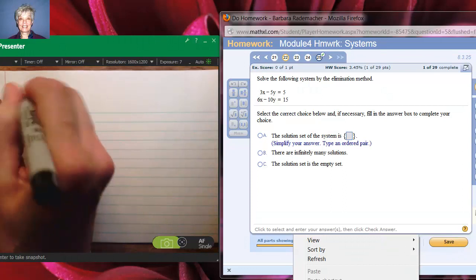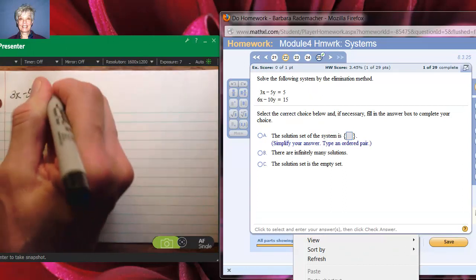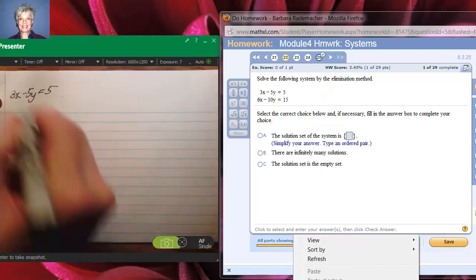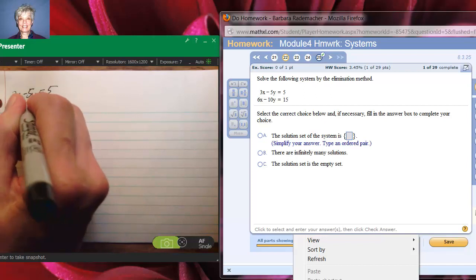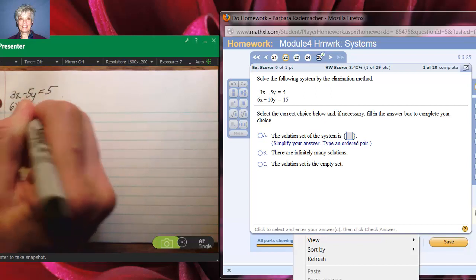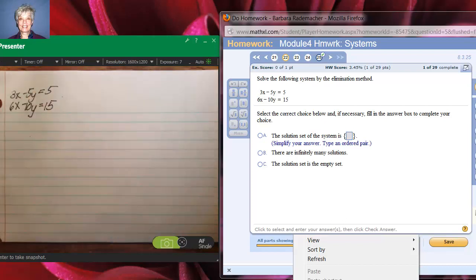3x minus 5y equals 5 and 6x minus 10y equals 15. The instructions say to solve by elimination, so I will.